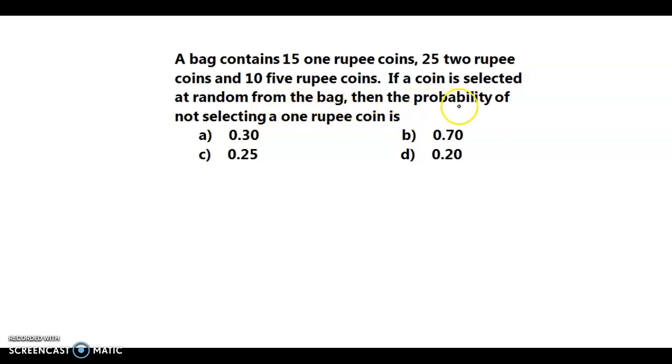then the probability of not selecting a one rupee coin is. So here we have 15 one rupee coins. Rupee 1 coin, the number is 15.